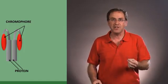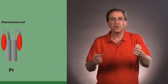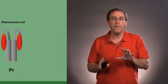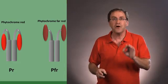When it's in the first conformation which we're going to call PR, phytochrome red, it absorbs red light. When it's in the second conformation which we're going to call PFR, phytochrome far red, it will absorb far red light.